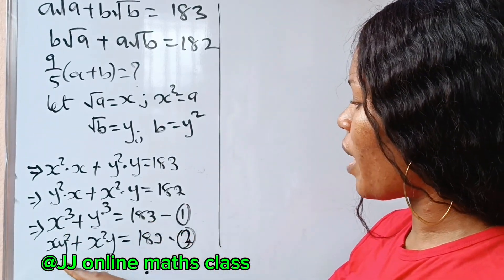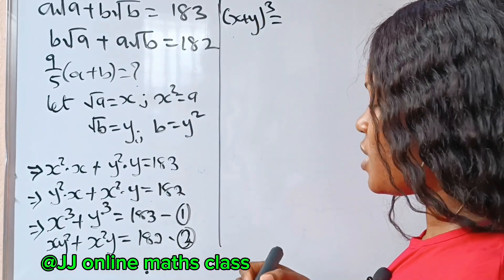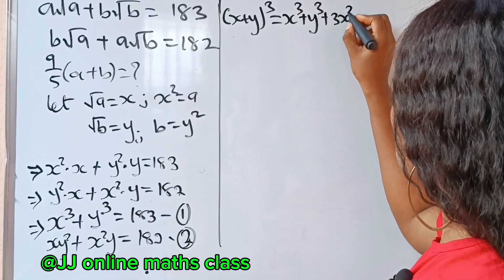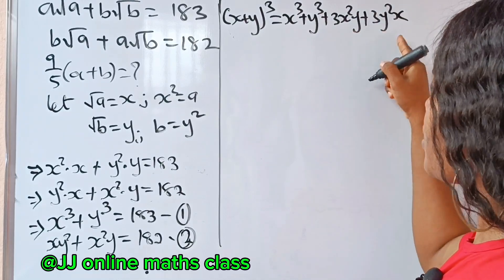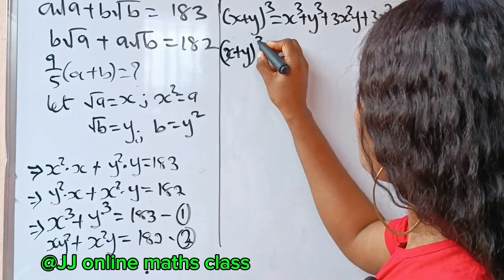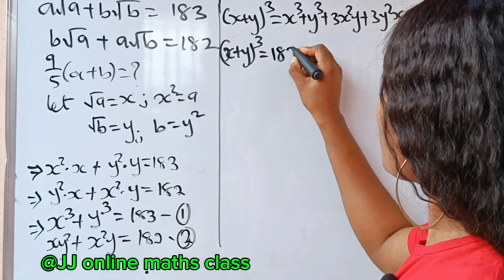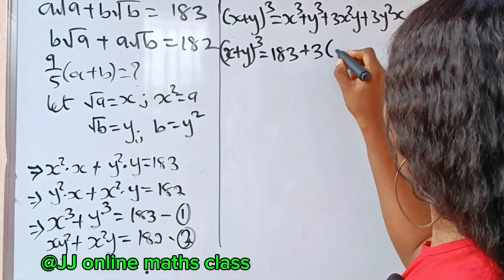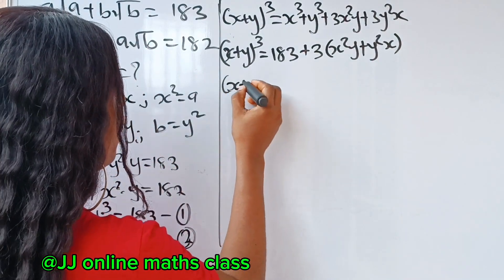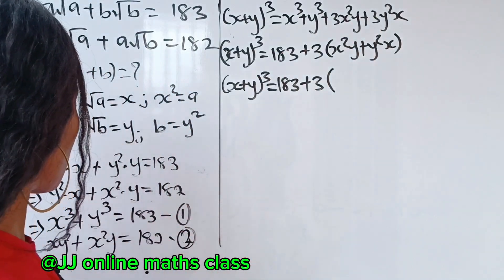Now, we have equation 1 and equation 2. Let's expand x plus y raised to the power of 3. Because if you expand this, you get x cubed plus y cubed plus 3x²y plus 3y²x. We have virtually everything we need here. So let's go ahead and substitute: x plus y to the power of 3 equals x cubed plus y cubed, which is 183, plus 3 times the bracket x²y plus y²x.